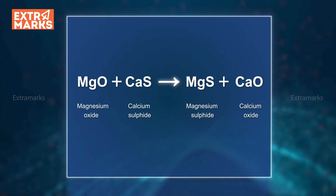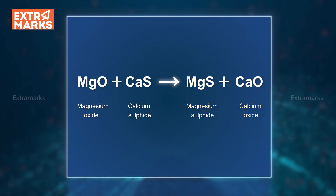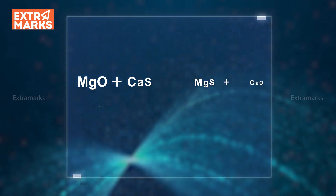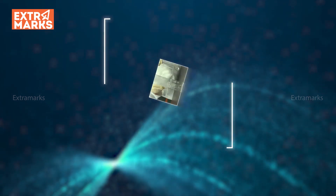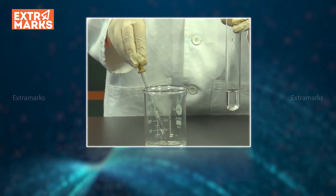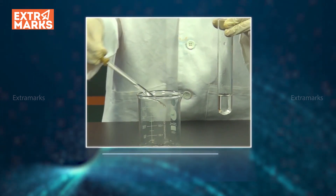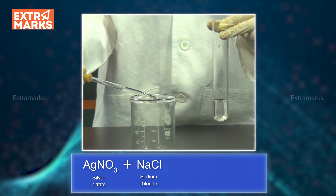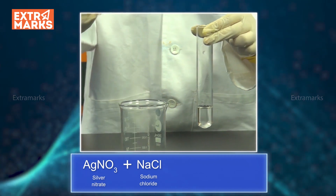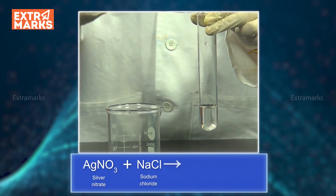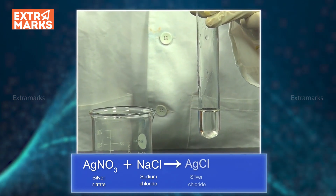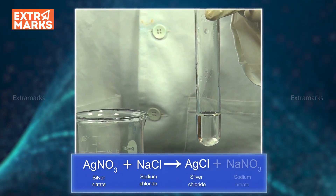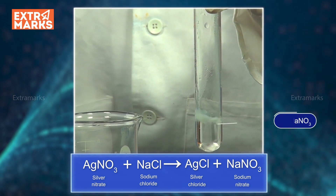The reaction of magnesium oxide and calcium sulfide is another example of a double displacement reaction. Magnesium sulfide and calcium oxide are formed in this reaction. Now, can you predict what would be the products when silver nitrate is made to react with sodium chloride? Of course, silver chloride and sodium nitrate.